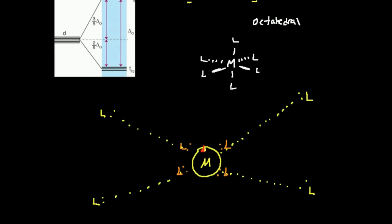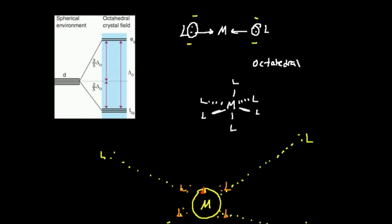Once we turn on those electrostatic interactions, we have our final setup. The two quadratic orbitals, dz-squared and dx²-y², are collectively designated e sub g. The other three — dxy, dxz, and dyz — are collectively called t2g. When you see e sub g, that refers to the two higher-energy quadratic orbitals. t2g refers to the three lower-energy d-orbitals.